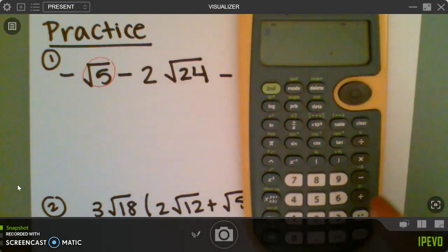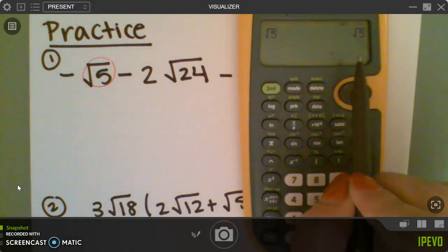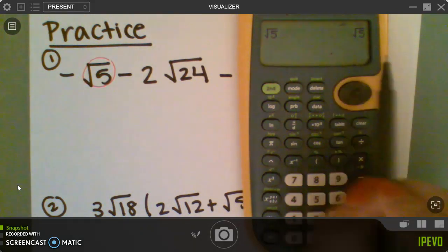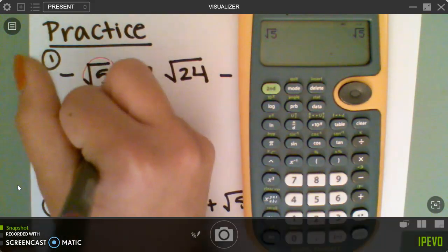So I'm going to do second, x squared, 5, enter. So notice how the root 5 is still root 5. That means it's as simple as it can go. So this right here is a negative square root of 5.